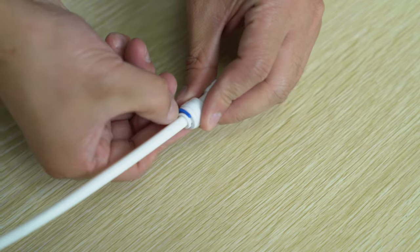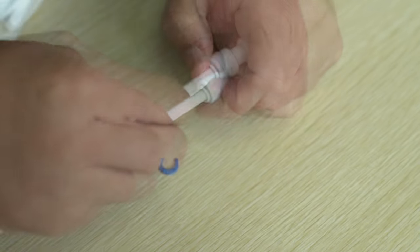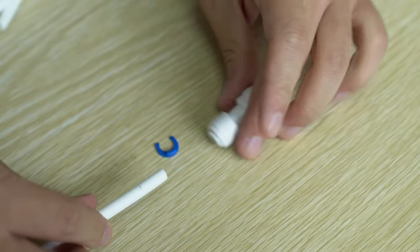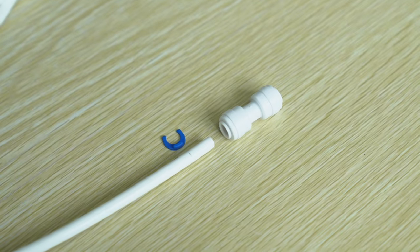To remove the tube, remove the locking clip and hold down the collar against the fitting, and pull the tube in the opposite direction to release the grip.